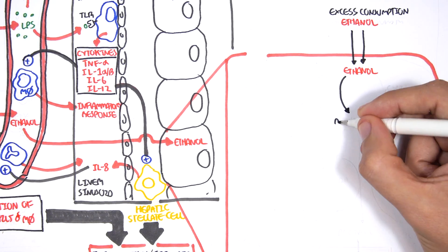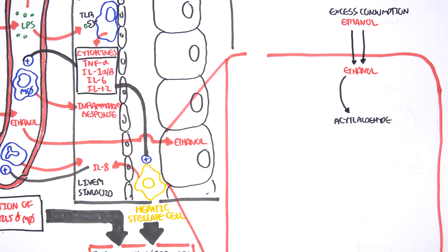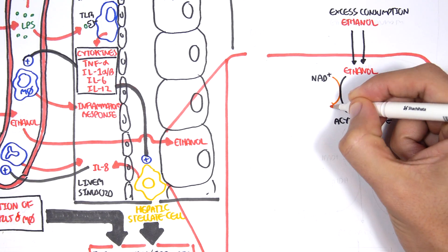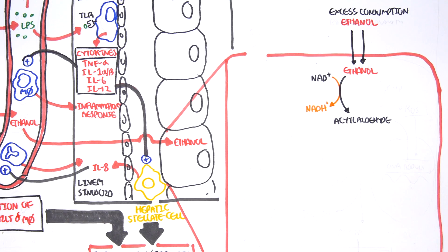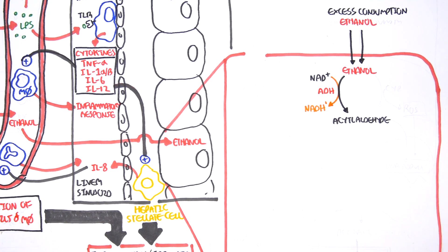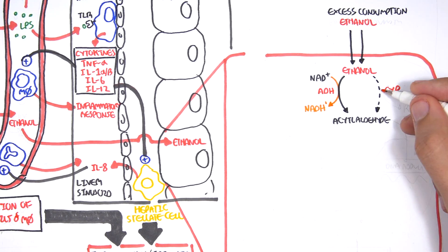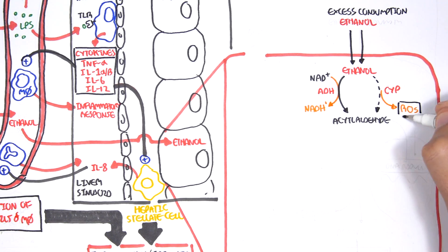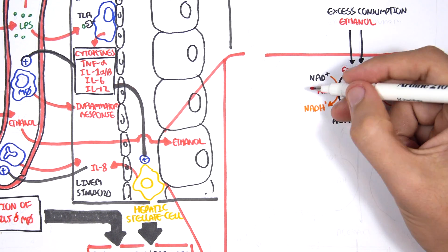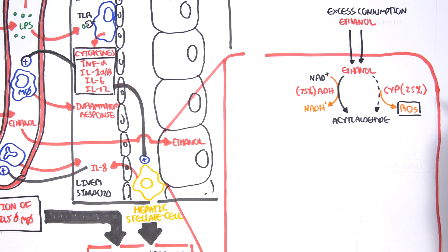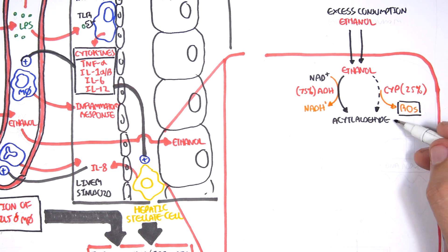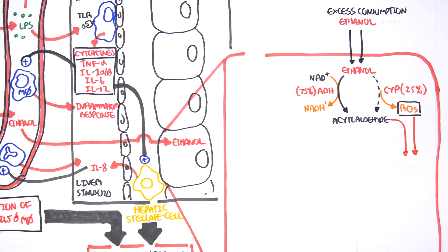There are two main pathways. The first and main one is done by the enzyme alcohol dehydrogenase, ADH. In this reaction, NAD is reduced to NADH. The second pathway is through the cytochrome pathway, where ethanol is still converted to acetaldehyde, but this reaction results in the production of reactive oxygen species, ROS. The liver usually uses the alcohol dehydrogenase pathway 75% of the time, compared to the cytochrome pathway at 25%.